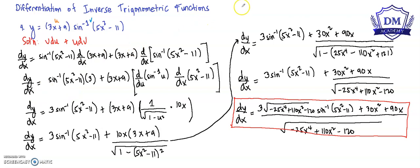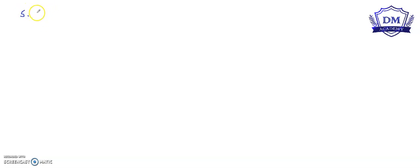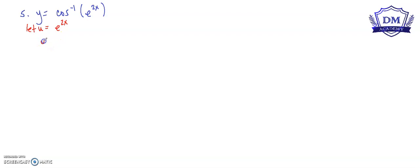Let's have our last problem. We have our function y is equal to the inverse cosine of e raised to 2x. We let u be equal to e^(2x), so our function y will be the inverse cosine of u.